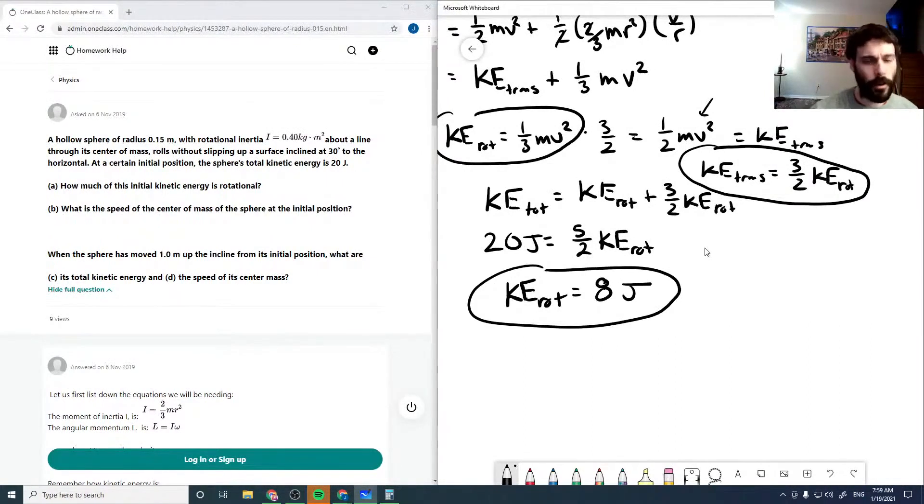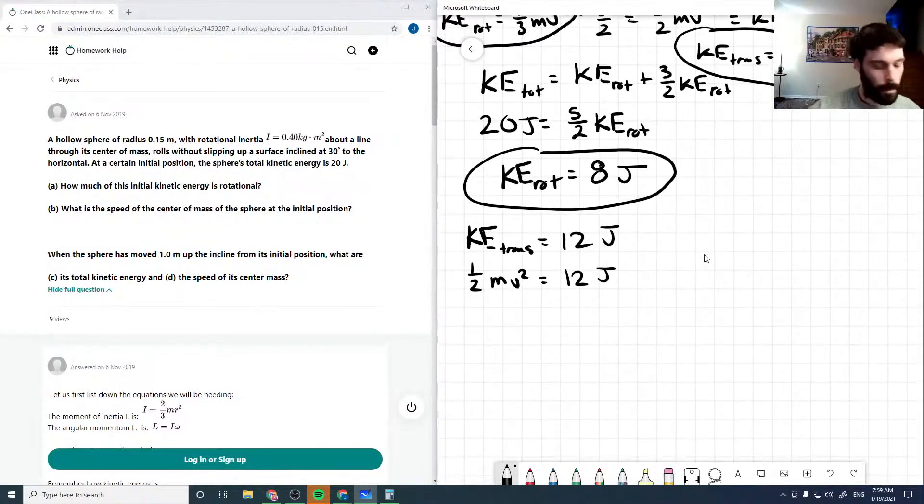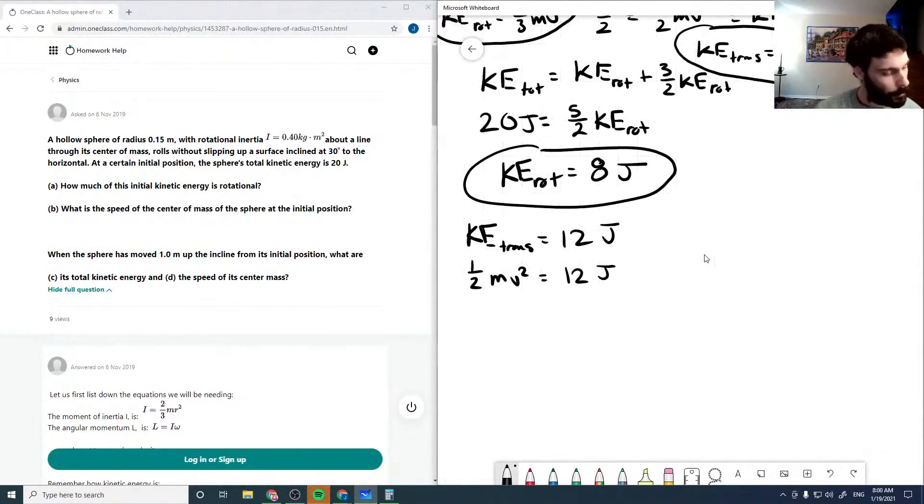So that's how much of our initial energy is rotational. We want to know what the speed of the center of mass of the sphere is at this position. So if our rotational is eight joules, then our translational must be 12 joules as is what's left. So one half mv squared is 12 joules.